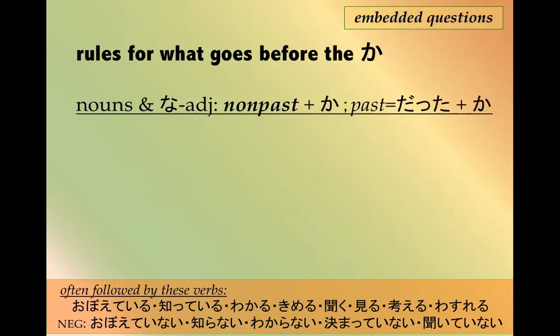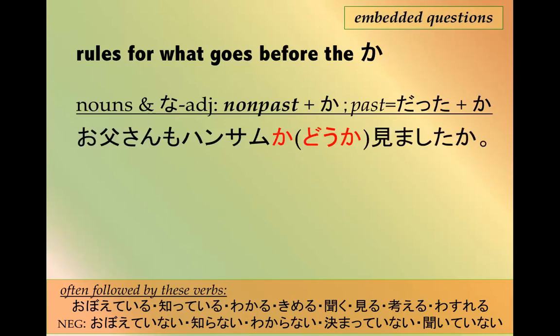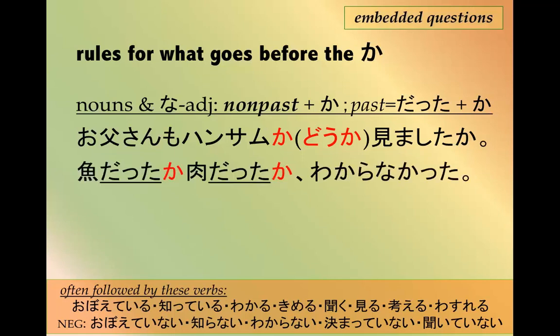For nouns and な-adjectives, you can put the non-past form plus か, but if it's in the past, you need だったか. For example: お父さんもハンサムかどうか見ましたか — 'Did you see whether the father is also handsome?' And: 魚だったか肉だったかわかんなかった — 'I didn't know whether it was fish or meat.' Both are in past tense, so だったか is necessary here.